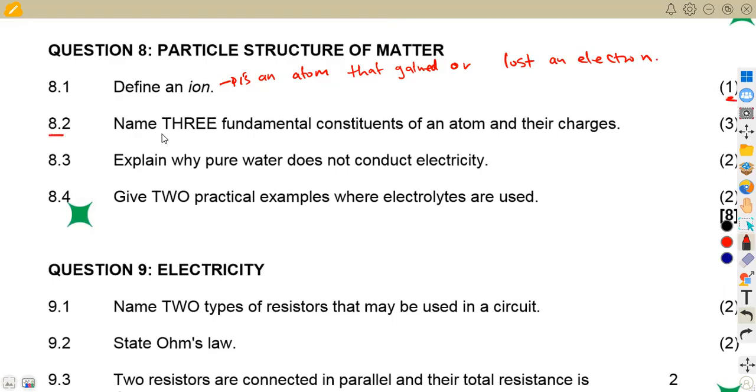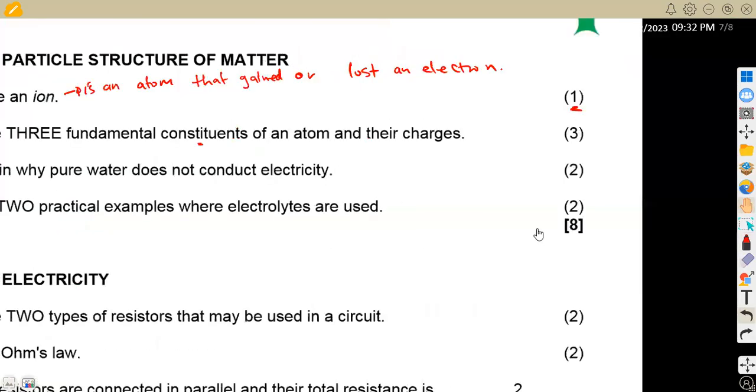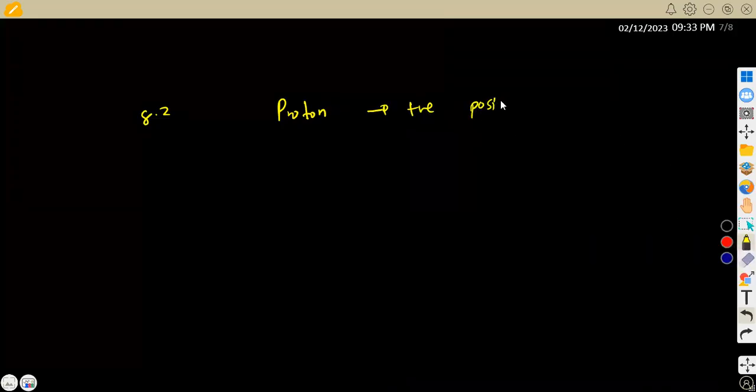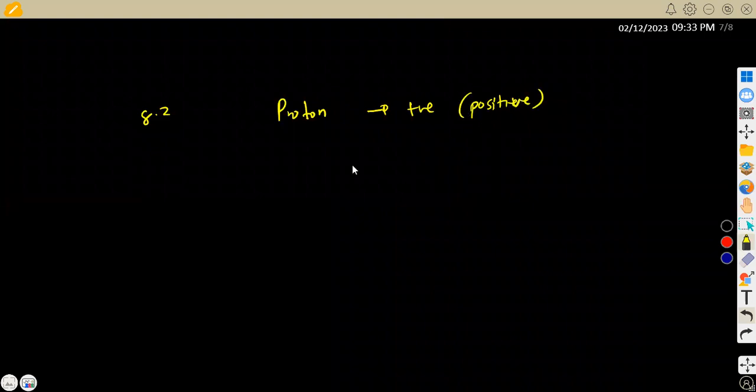8.2, name three fundamental constituents of an atom and their charge. So remember, we are dealing with an atom here. So we know that the combination of an atom is going to have the protons, the neutron, and the electron. So we've got the proton, where we know that the proton, they are positively charged. So this is positive.